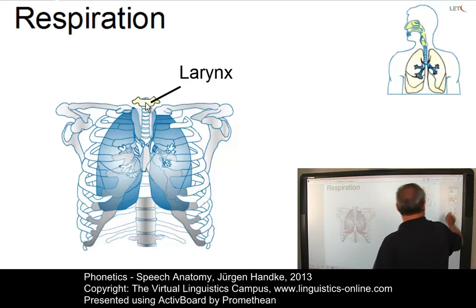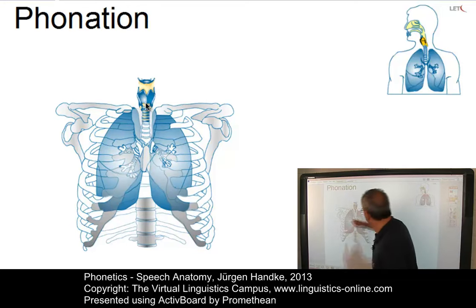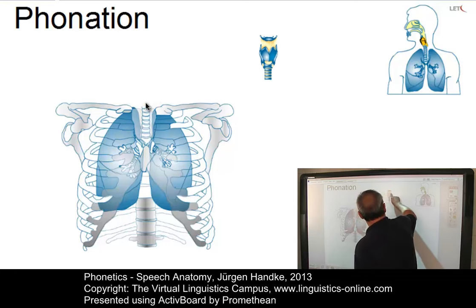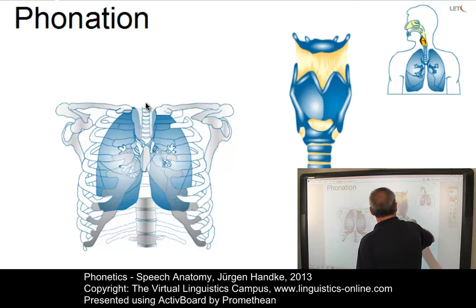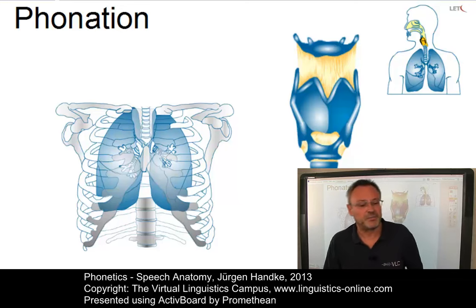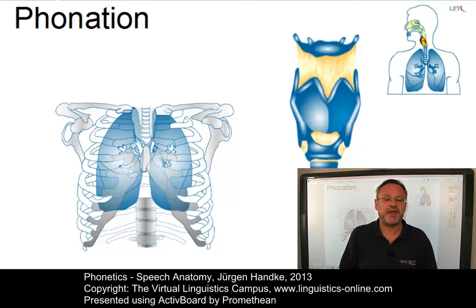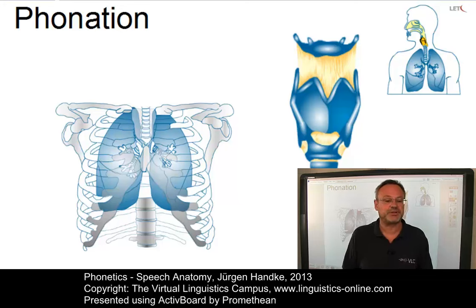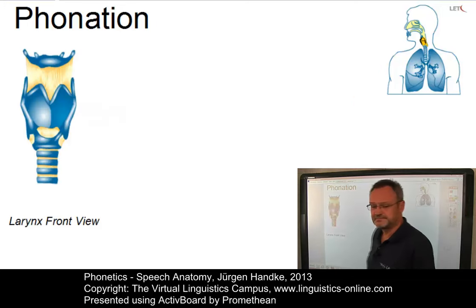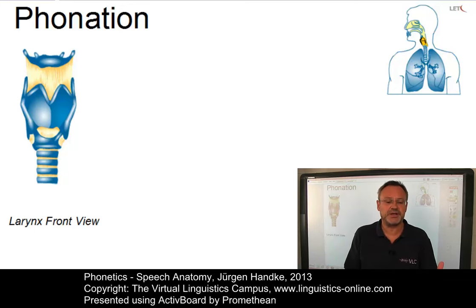Let's look at the larynx next. You can see it here — let's enlarge it a little bit. The primary biological function of the larynx is to act as a valve, closing off air from the lungs or preventing foreign substances from entering the trachea. In speech production, the larynx modifies the airflow from the lungs in such a way as to produce an acoustic signal.